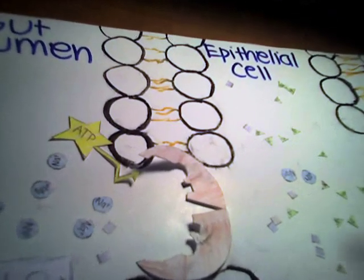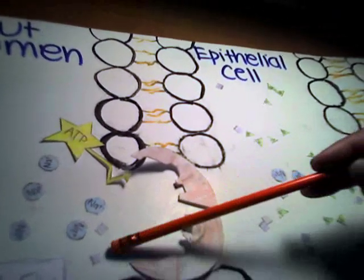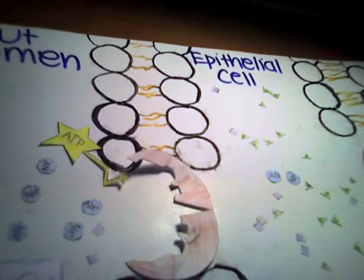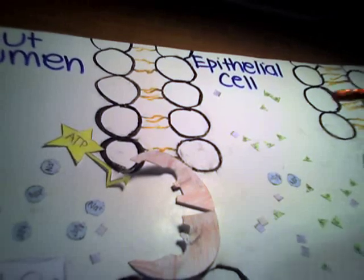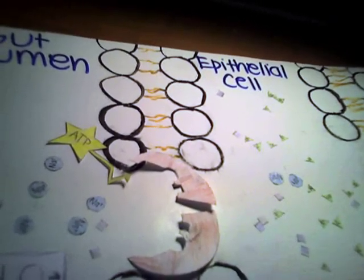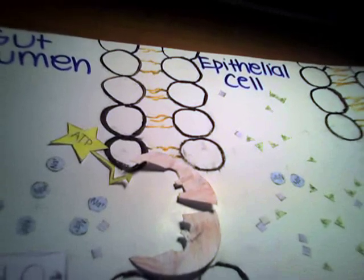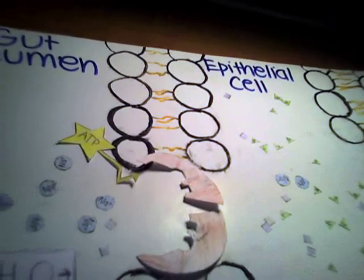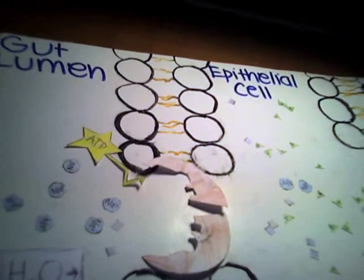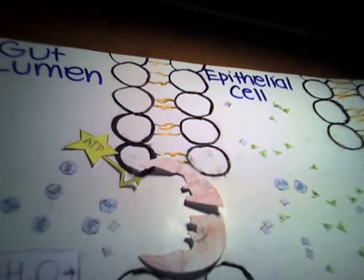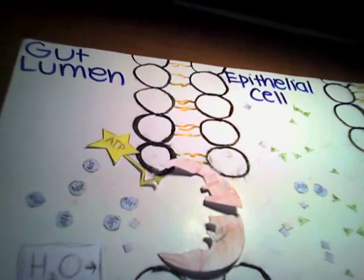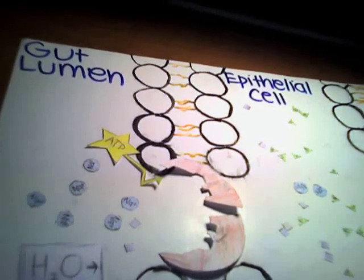Produced by the digestion of food, glucose, represented by these purple squares here, must be transported from the gut lumen into the epithelial cells. This process, done by SGLT1, or sodium-dependent glucose co-transporter 1, must be done against the concentration of glucose, which is in higher concentration inside the cells. We can therefore say that the epithelial cells are hypertonic to the gut lumen in terms of glucose, and that the gut lumen is hypotonic to the epithelial cells.